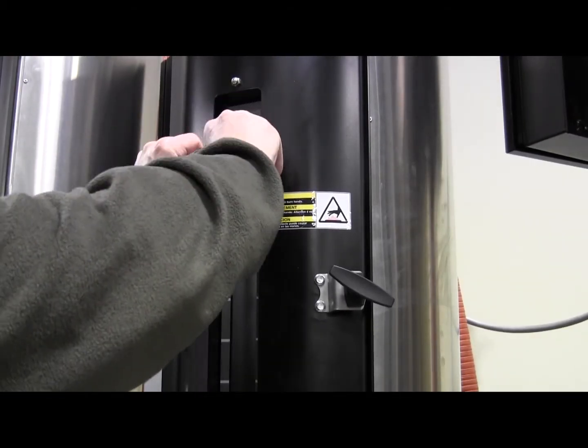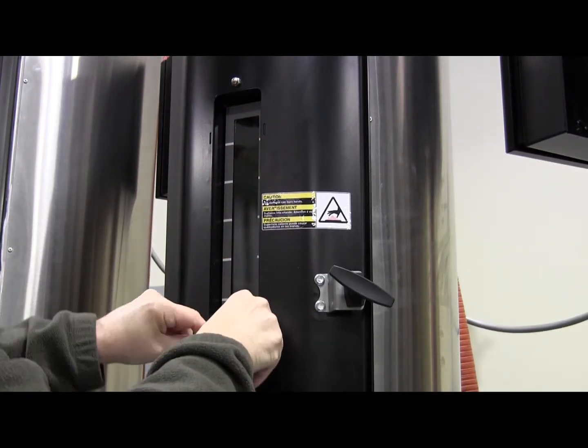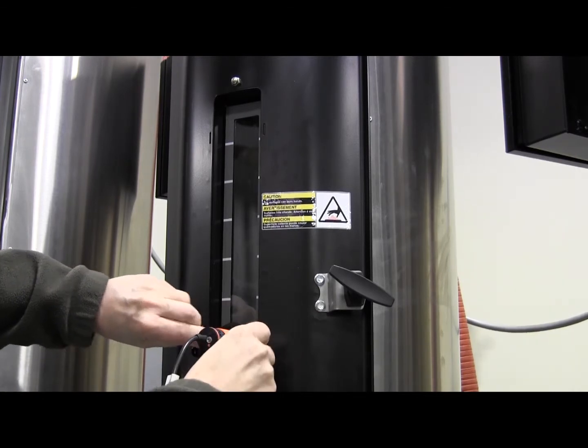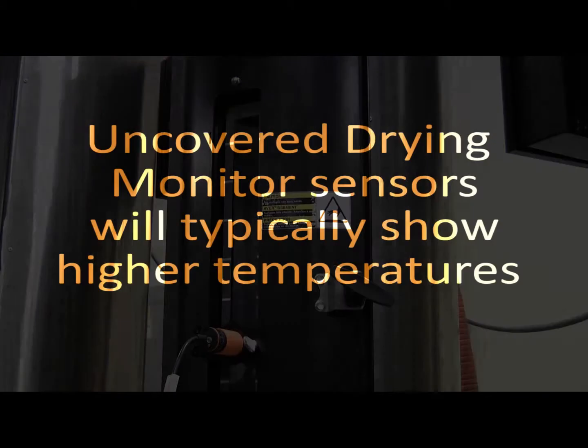One additional note on material levels. Hoppers being used at less than full capacity, that is, using lowered demand sensors, are very likely to have more than one drying monitor sensor exposed to air and not covered by the material being dried. This should be taken into consideration when viewing your drying monitor data, since these open sensors will typically show higher temperatures.